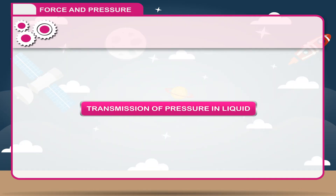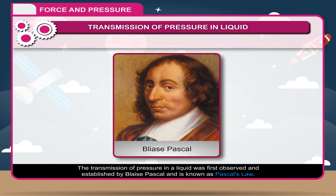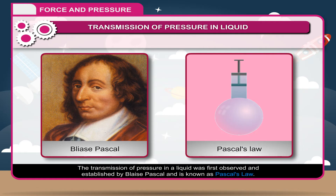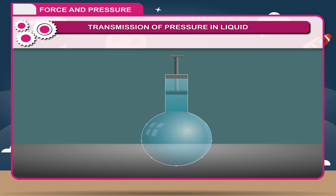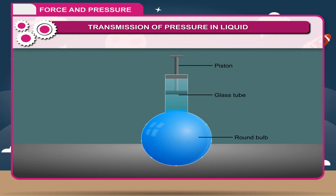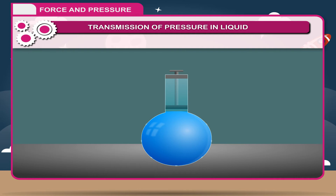Transmission of pressure in a liquid was first observed and established by Blaise Pascal and is known as Pascal's Law. According to Pascal's Law, when pressure is applied on a confined mass of liquid, it is transmitted equally and undiminished throughout the volume of the liquid, and acts at a right angle to the walls of the container. Activity: Take a long glass tube having a small piston at one end and a round bulb with holes at the other. Fill the apparatus with water and press the piston. You will observe that water comes out of all the holes with equal pressure.